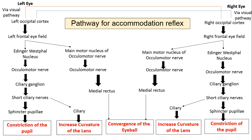The ciliary muscle and sphincter pupillae are smooth muscles, and the medial rectus is a skeletal muscle. The three changes of the Accommodation Reflex are the three C's: constriction of the pupil, increase in the anterior curvature of the lens, and convergence of the eyes — all occurring in both eyes.